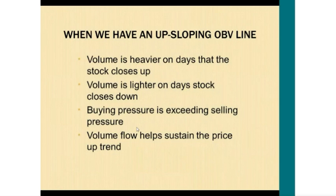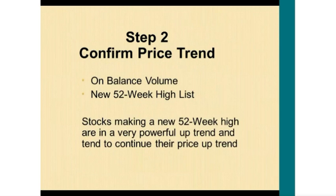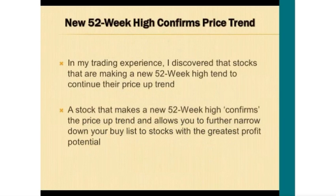Another confirmation indicator we use is the new 52-week high list. Stocks making a new 52-week high are in a very powerful uptrend and tend to continue that price uptrend, making it another way to confirm the price trend. In my trading experience, stocks making a new 52-week high tend to continue their uptrend, which confirms our buy signal from the trend indicator and allows us to further narrow down the list of stocks to buy with the best profit potential.